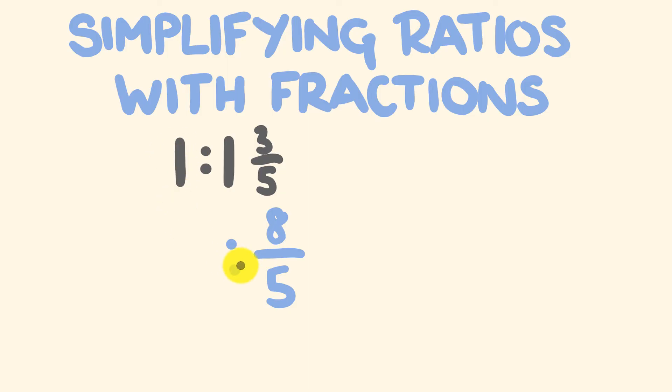Now, what is 1 as a fraction over 5? You can say 1 is equal to 5 divided by 5. So what we have now is 5 over 5 is to 8 over 5. So let's simplify this now. We can get rid of these denominators, and we are left with 5 is to 8. It's pretty cool, right?